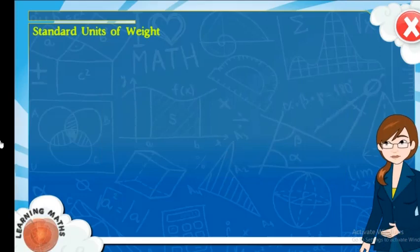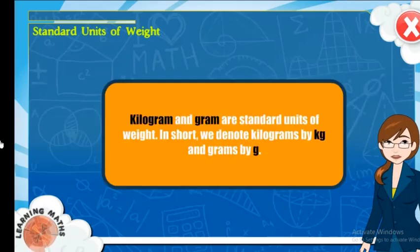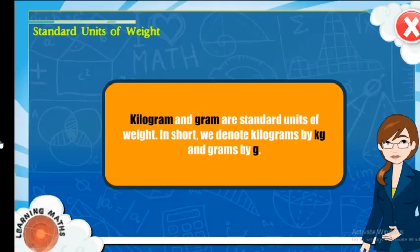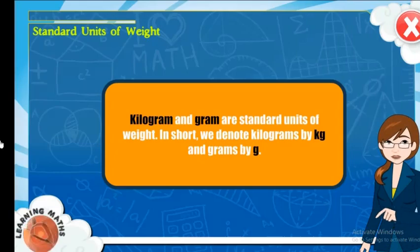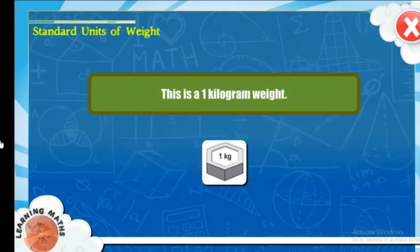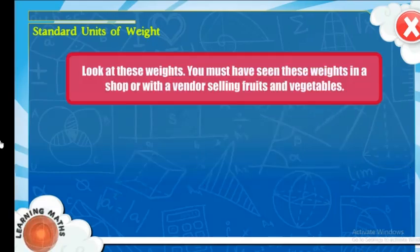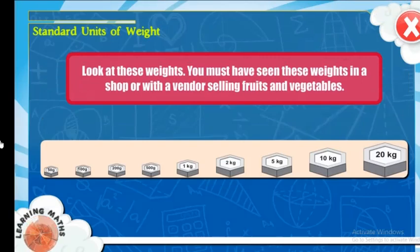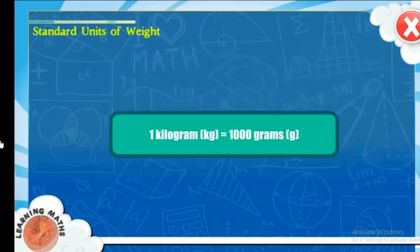Standard Units of Weight: Kilogram and Gram are standard units of weight. In short, we denote kilograms by kg and grams by g. This is a 1 kilogram weight. Look at these weights. You must have seen these weights in a shop or with a vendor selling fruits and vegetables. 1 kilogram (kg) is equal to 1000 grams (g).